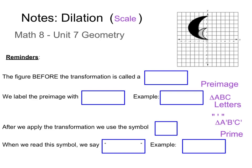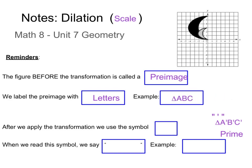A few reminders before we begin this transformation. The figure before the transformation is always called the pre-image. We label the pre-image with letters, so for example, triangle ABC. After we apply the transformation, we use this symbol with a little dash — it kind of looks like an apostrophe, but it's a line straight up and down. When we read this symbol, we say it's prime. For example, triangle A prime, B prime, C prime.